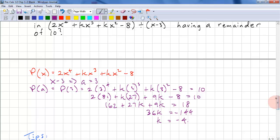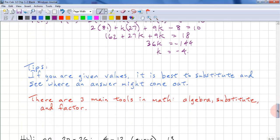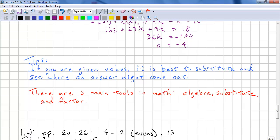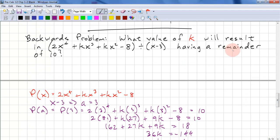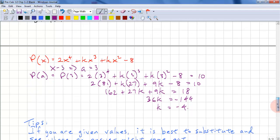And that's how we solve that type of problem. So, some final tips. If you're given values, it's best to substitute and see where an answer might come out. Just use the things that you know. So in this case, we know the remainder has the value of P(a), and we just substitute k in here and solve.